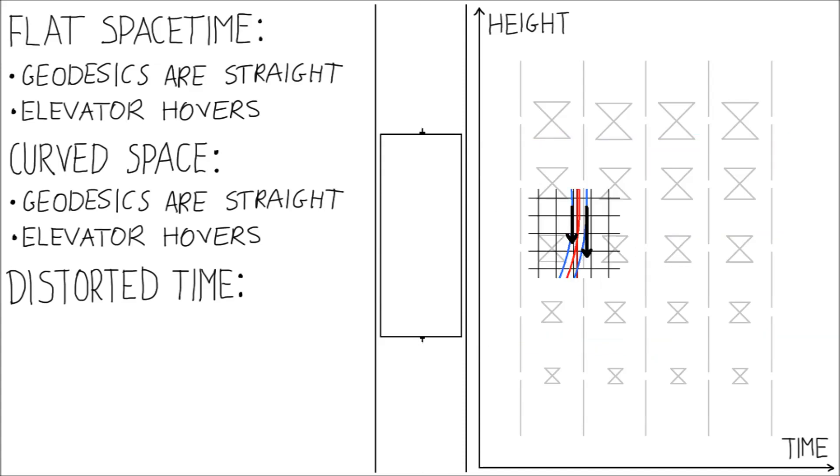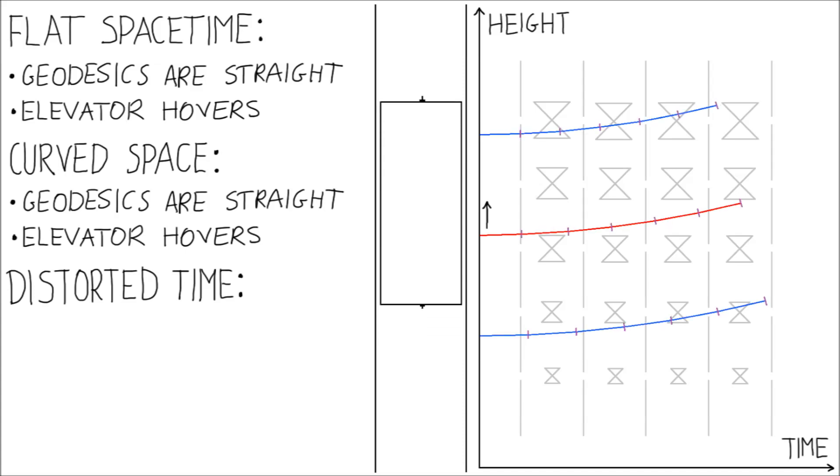What if there are no forces? Recall that the car on a curved surface was turning where the space was denser. Similarly, an elevator should go to a place where the time is denser. Then, all parts of the elevator travel the same amount of time. So, if time was like any other dimension of space, elevator would go up and gravity would be repulsive.